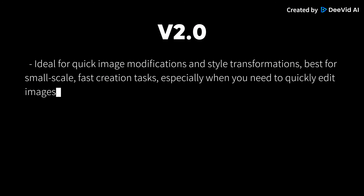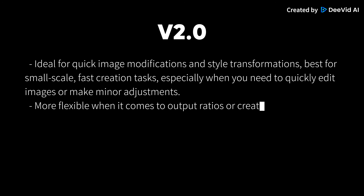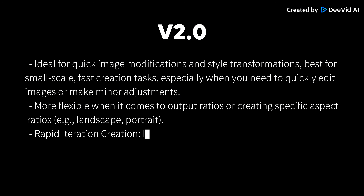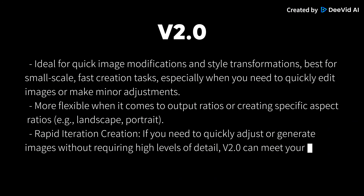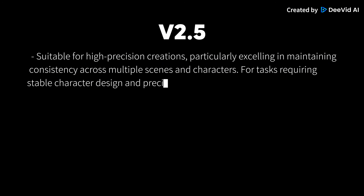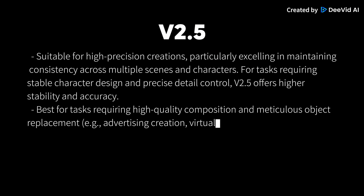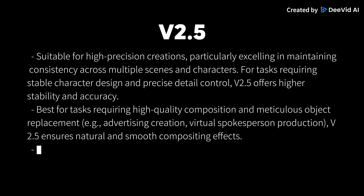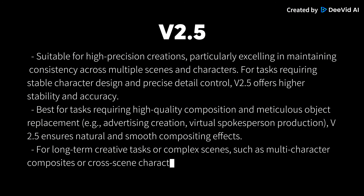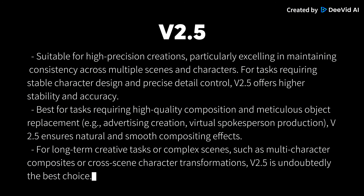Applicable scenarios — V2: ideal for quick image modifications and style transformations. Best for small-scale, fast creation tasks, especially when you need to quickly edit images or make minor adjustments. More flexible when it comes to output ratios, for example landscape or portrait. For rapid iteration, if you need to quickly adjust or generate images without requiring high levels of detail, V2 can meet your needs. V2.5: suitable for high-precision creations, particularly excelling in maintaining consistency across multiple scenes and characters. For tasks requiring stable character design, precise detail control, high-quality composition, and meticulous object replacement — such as advertising creation or virtual spokesperson production — V2.5 ensures natural and smooth compositing effects and is undoubtedly the best choice for long-term creative tasks or complex scenes.